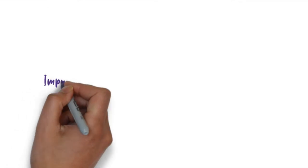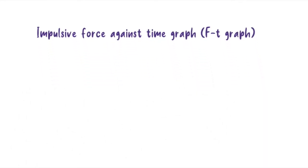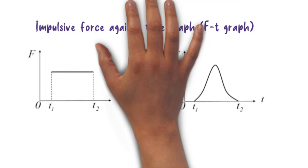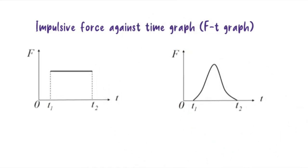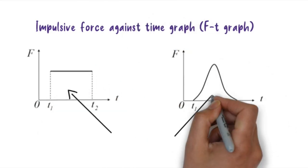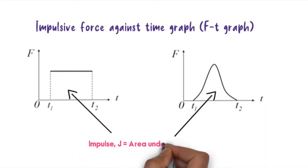Last but not least, the impulsive force against time graph is used to calculate impulse. The impulse is represented by the area under the F-t graph. That's all, thank you.